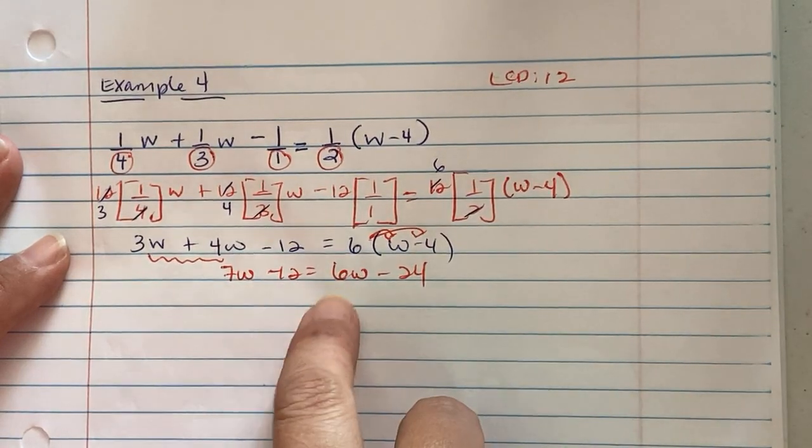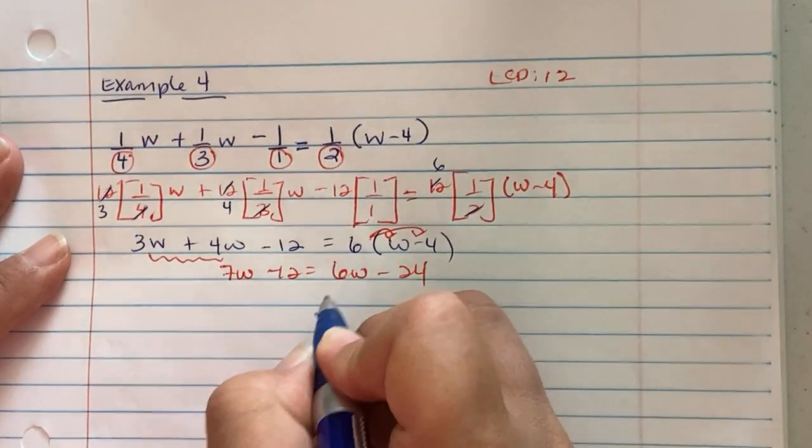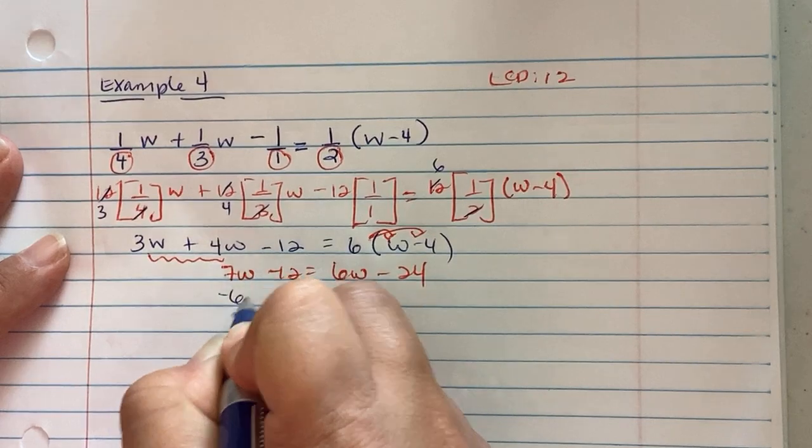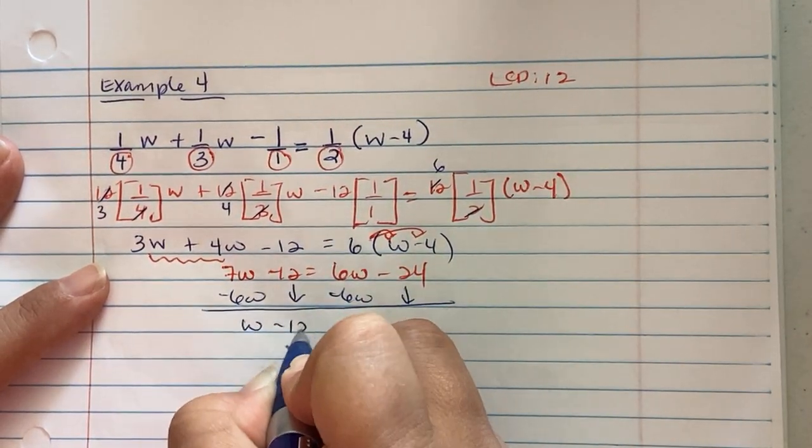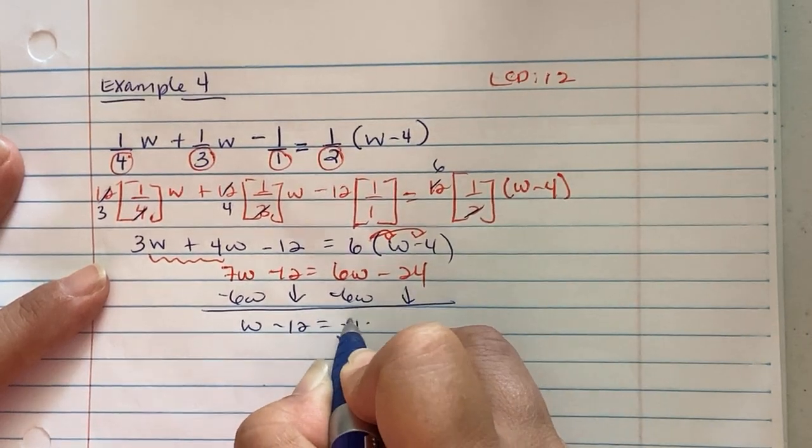Crossing that bridge, positive 6w, I'm going to subtract 6w. So we get w minus 12 equaling negative 24.